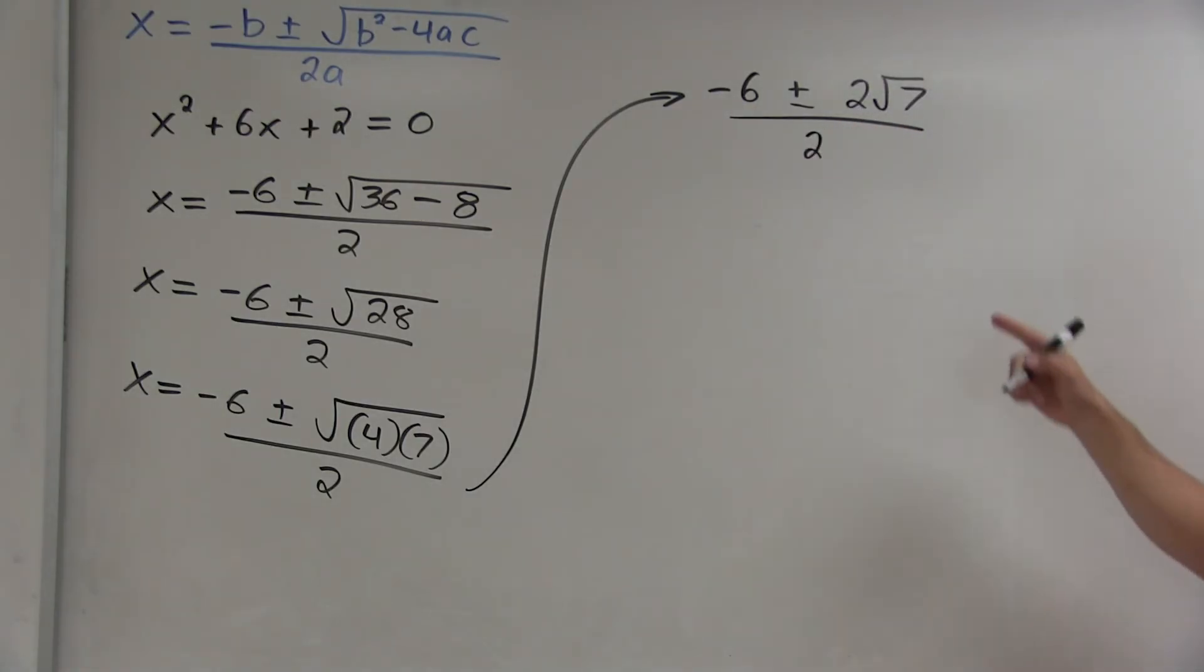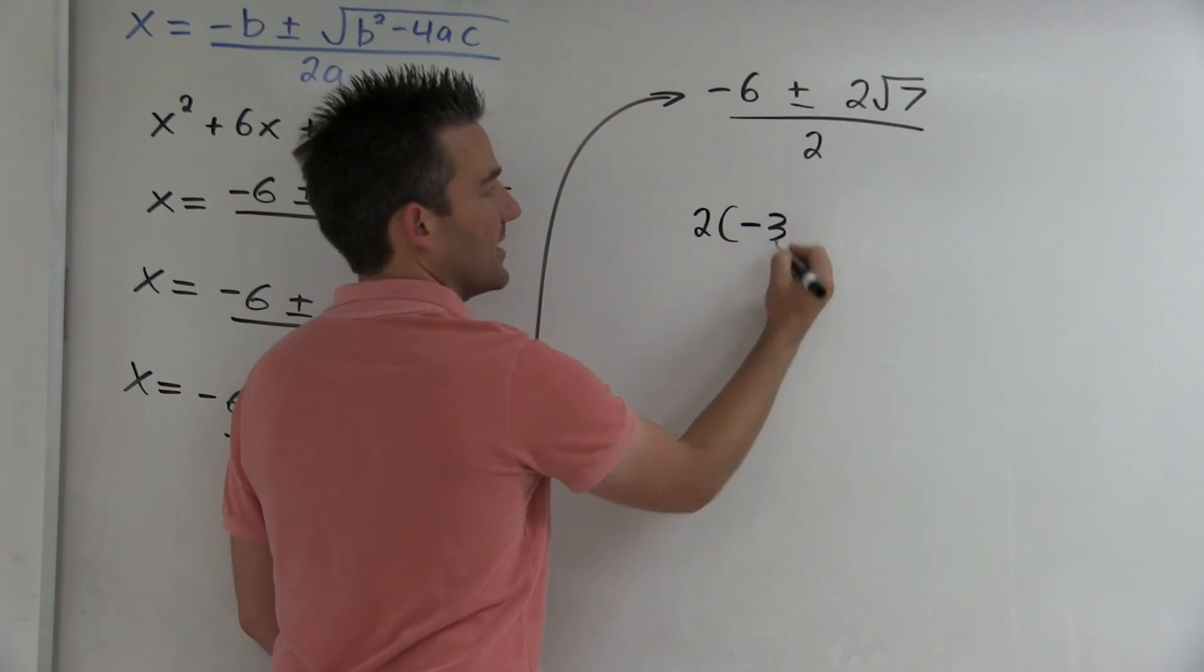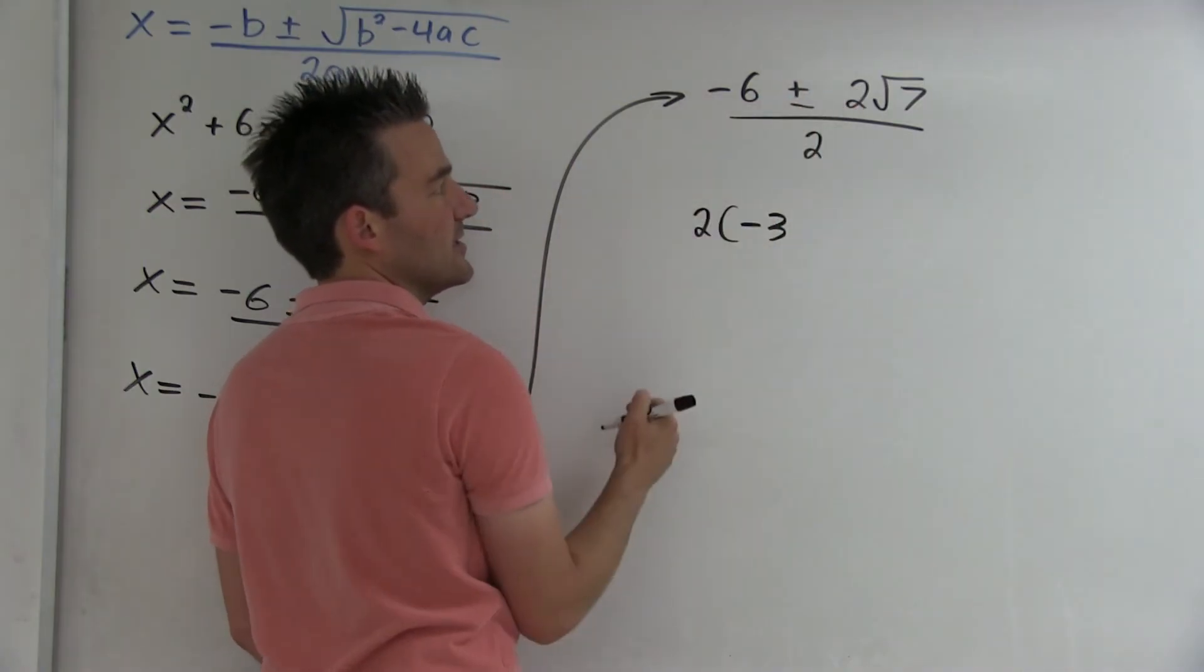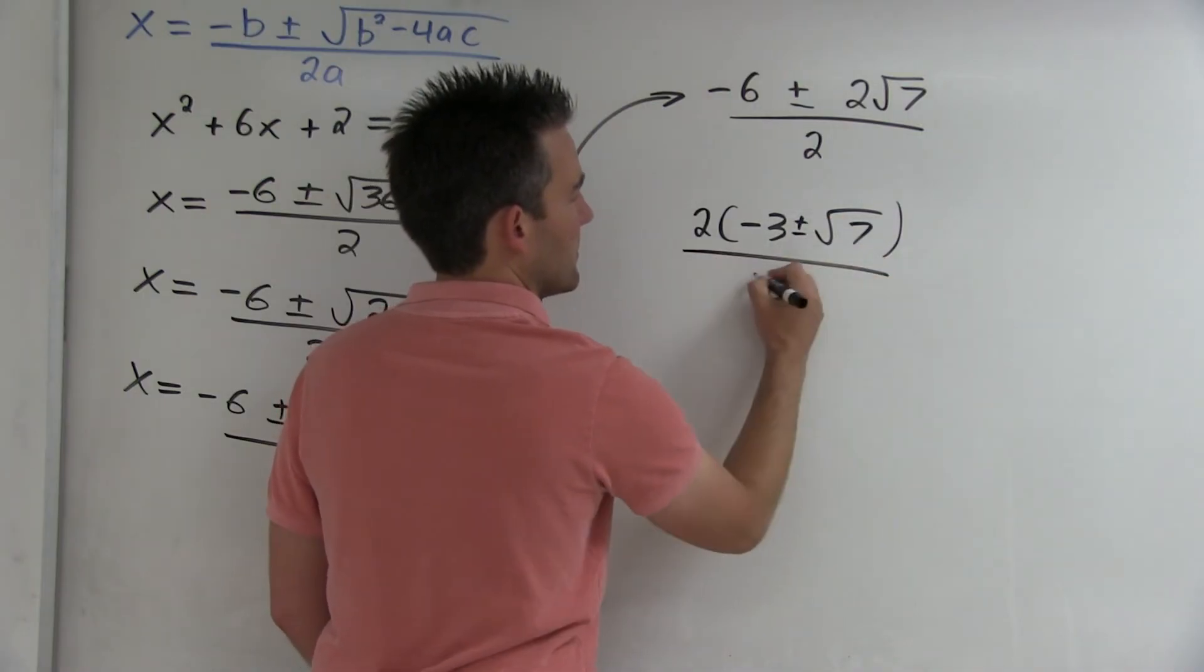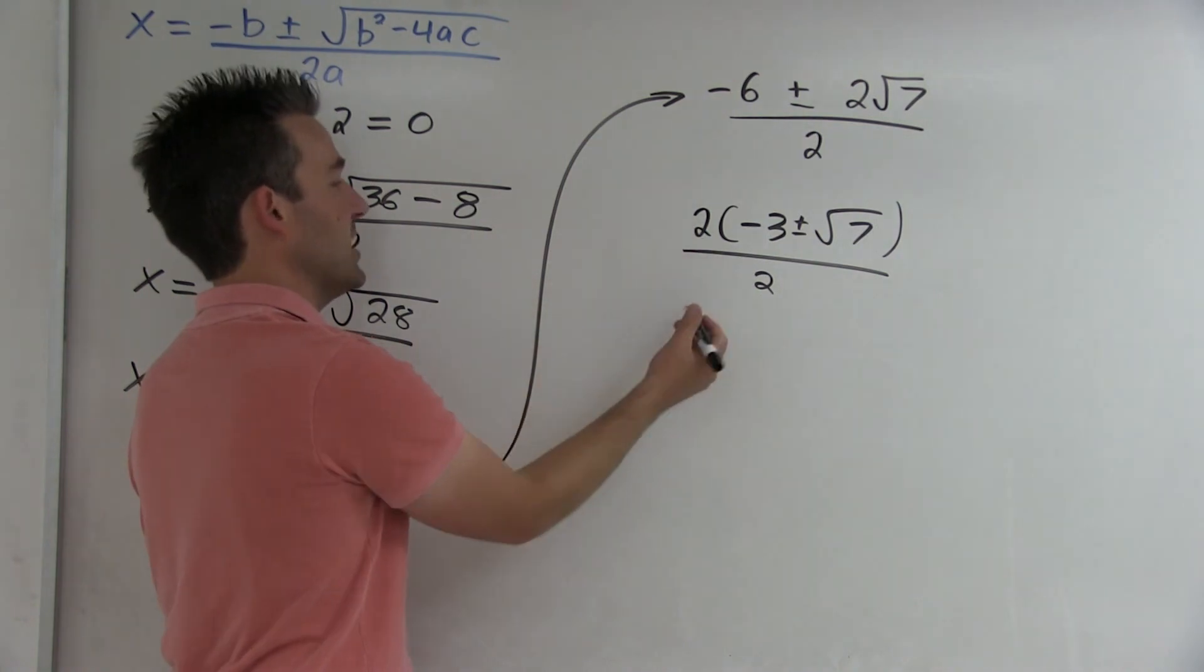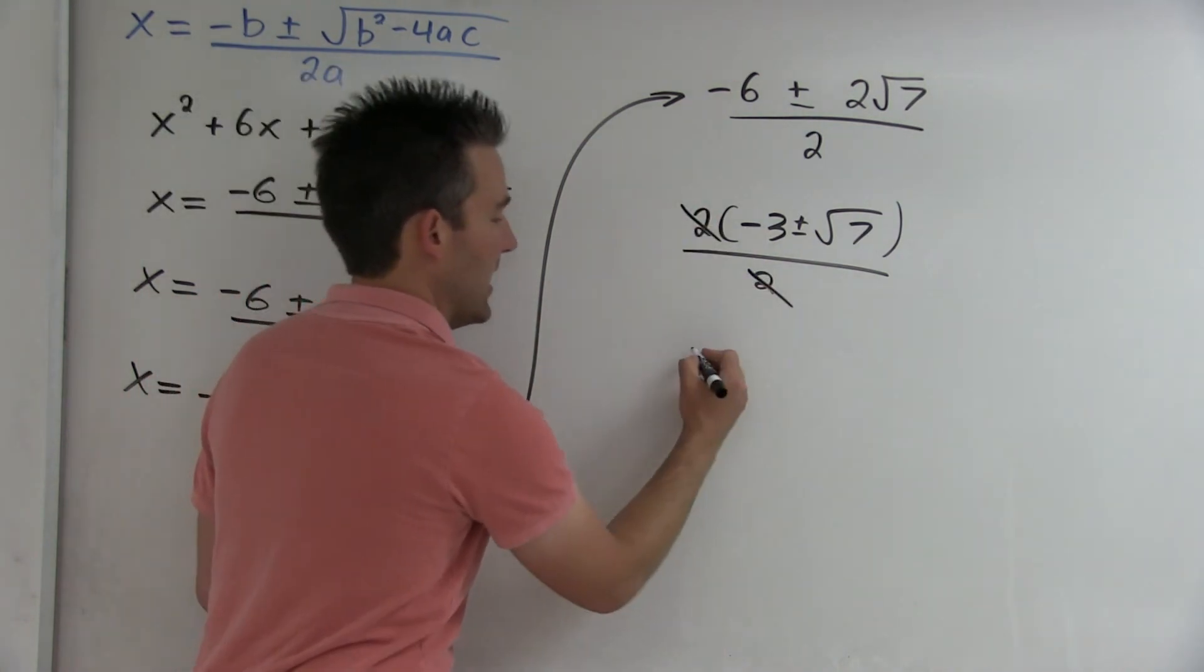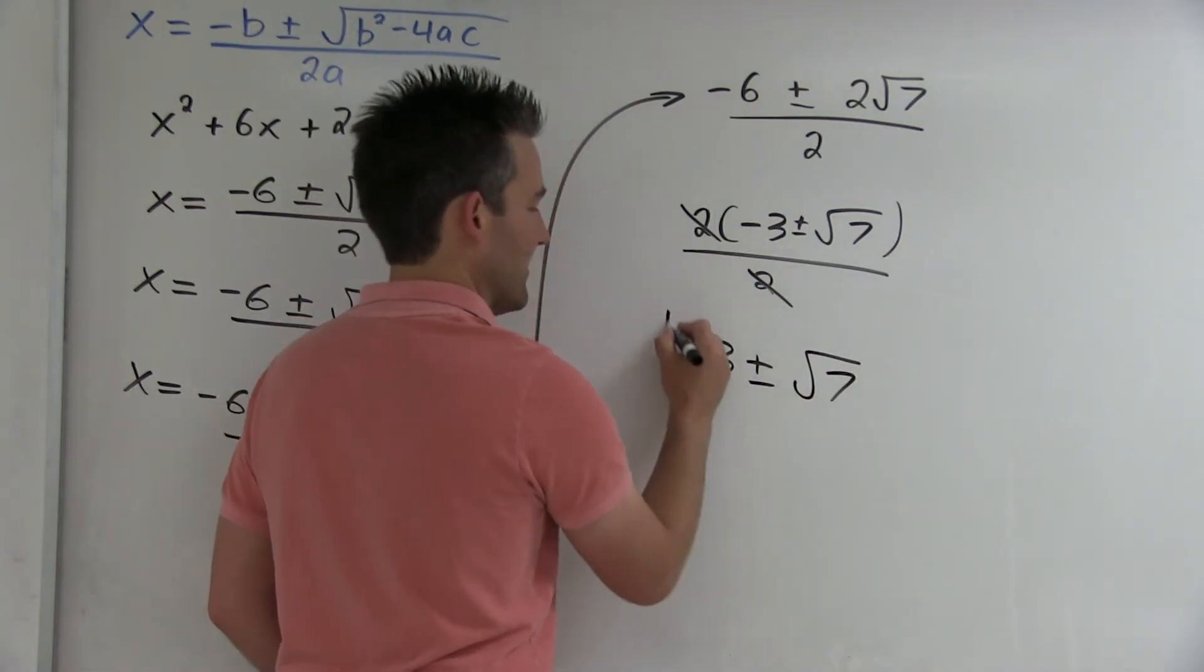There's still some simplification we can do here. You can factor a 2, a positive 2, out of this binomial in the numerator. So if we factor out a 2, 2 times what is negative 6? Negative 3. And 2 times what is 2 rad 7? Just rad 7. So since there's a 2 as a factor in both the numerator and denominator, we can cancel it out. And we end up with the solutions negative 3 plus or minus rad 7.